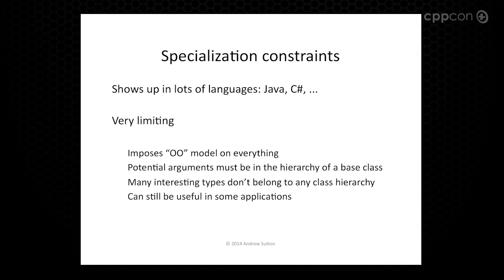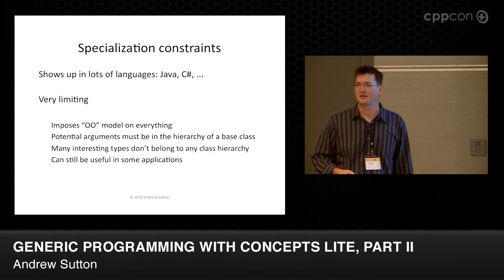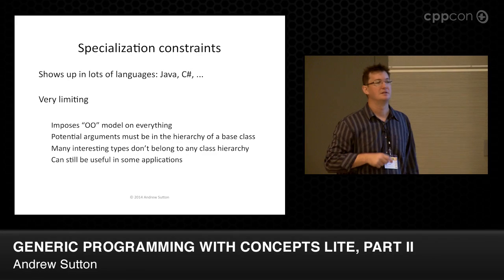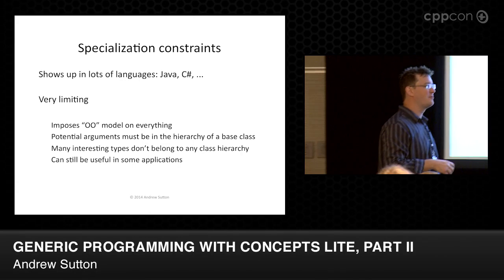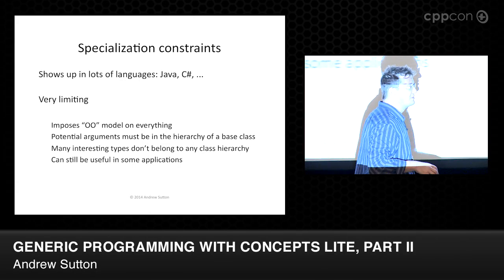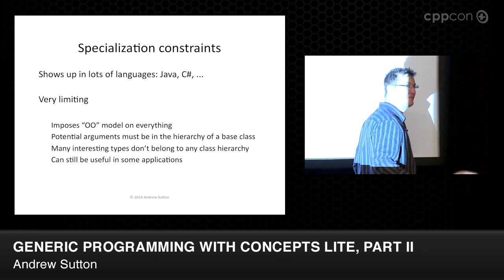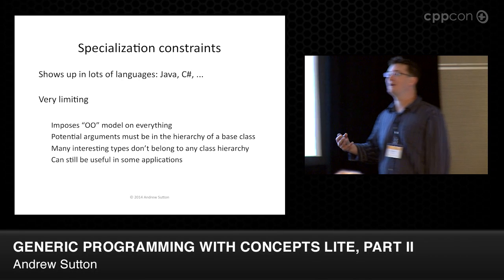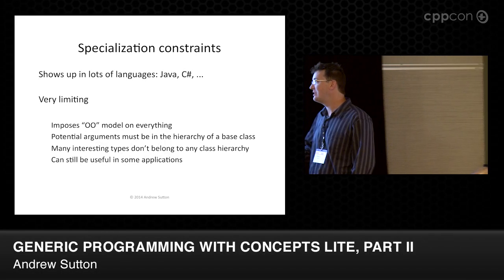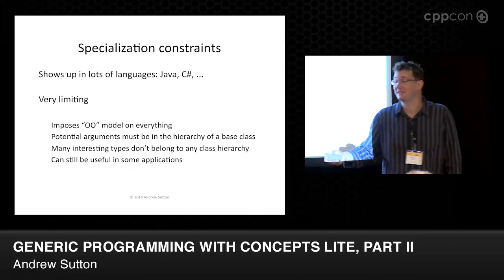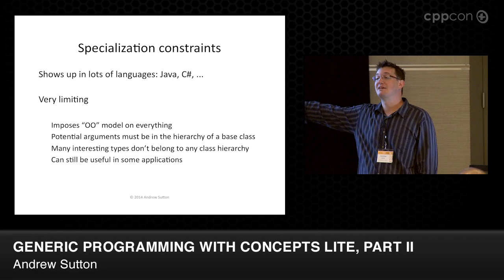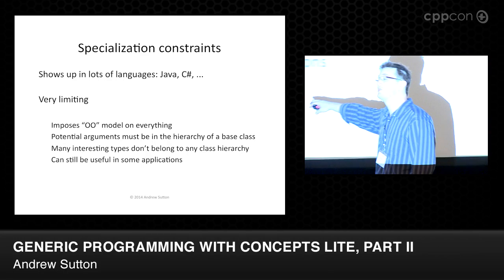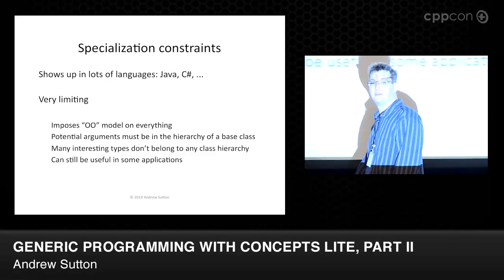If you're familiar with Java generics or C# generics, or any language that has subtype constraints on parameters, it kind of imposes an OO model on everything. Because if everything has a base type, then all your arguments have to be derived from something. And for whatever reason, this isn't really a good idea — maybe int doesn't have a base class, and it doesn't. So maybe this idea isn't really the best way to express constraints for every single thing you want to ask about in abstraction. It's very limiting.